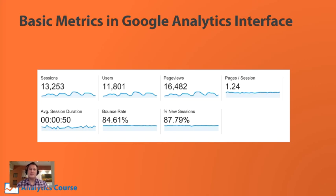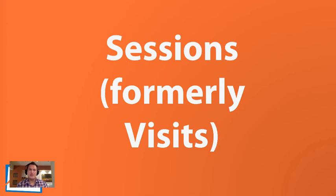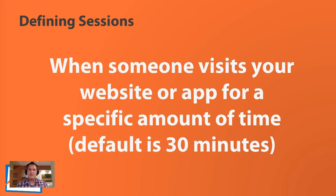Sessions — we used to call these visits, but now a session is basically when somebody visits your website or app for a specific amount of time, with the default being 30 minutes. For example, if Jeff visits jefflytics.com at noon and pokes around a couple of pages, then leaves and doesn't come back until 1 p.m., that is two different sessions. But if Jeff kept viewing a new page within that 30-minute window, it would all be one single session.